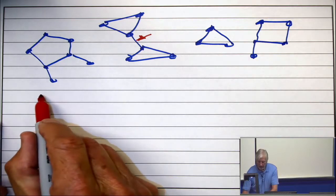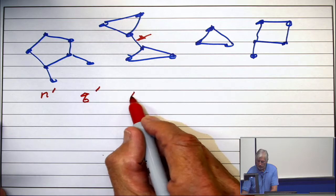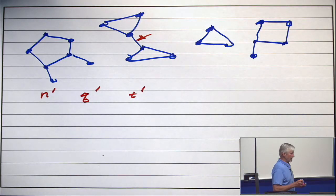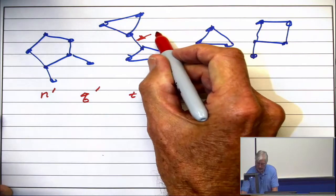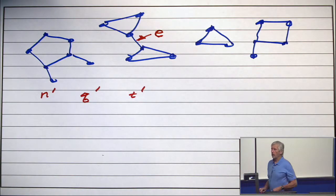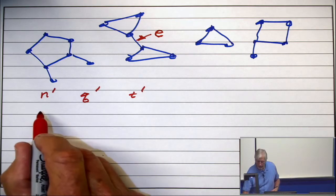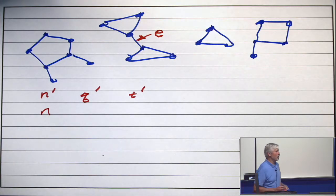All right, so if we let n prime, q prime, and t prime be the number of vertices, edges, and faces when we take the edge e away. So here's my edge e. I want to write those values in terms of the old ones. So n prime is just n. It didn't change.